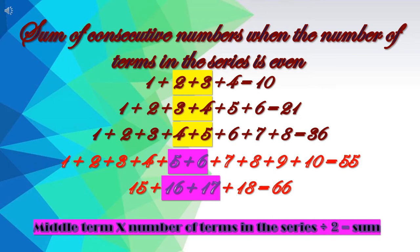Now what is the pattern in this? Again I have highlighted the middle numbers. Since these are even-count series, there are two middle numbers — the two numbers right in the middle are our middle terms. We multiply the sum of the middle terms by the number of terms divided by 2. So in the first series, the middle terms are 2 plus 3, which is 5. The number of terms is 4, divided by 2 gives 2. So 5 multiplied by 2 is equal to 10.